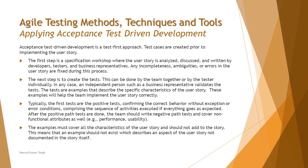The tests are examples that describe the specific characteristics of the user story, and these examples help the team implement the user story correctly. Typically the first tests are positive tests — as we know from the foundation course, we always start with positive tests to confirm if the correct behavior is being implemented. If the valid tests are not passing, there's no point executing the invalid ones.